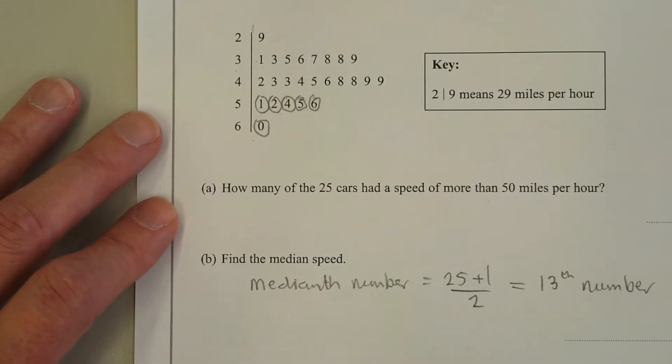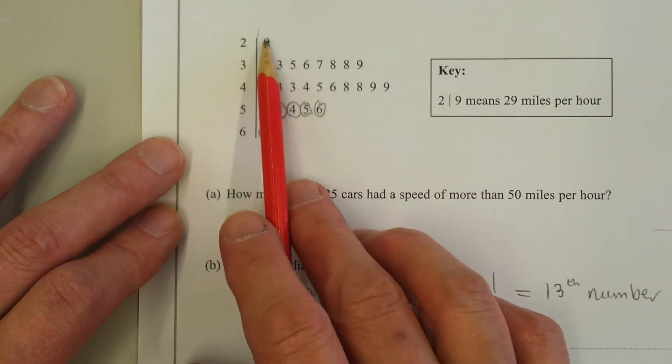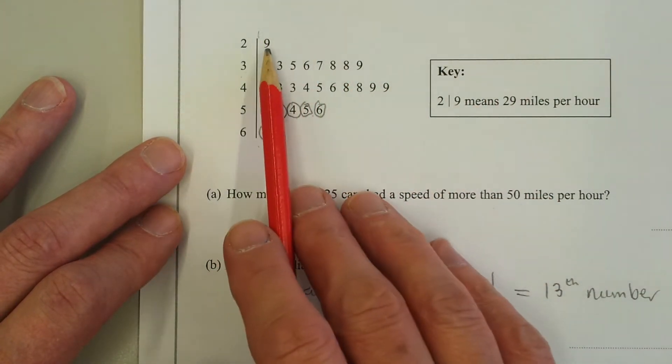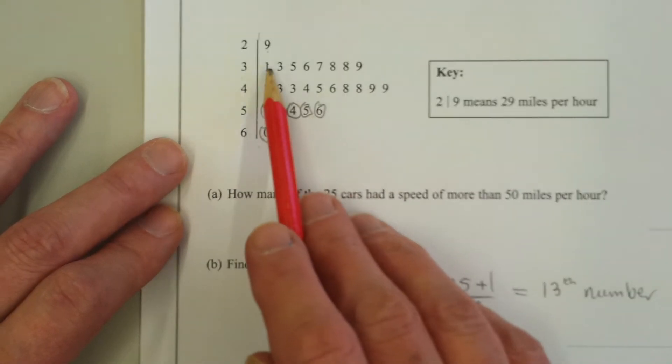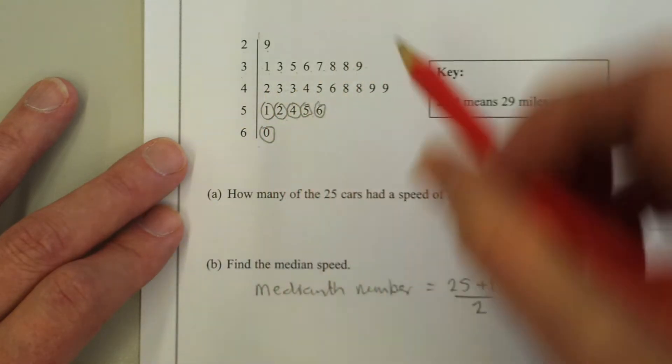Let's go back to the table and find the 13th number. You start from the beginning of the leaves and work over. So this is the 13th number: 1, 2, 3, 4, 5, 6, 7, 8, 9, 10, 11, 12, 13.